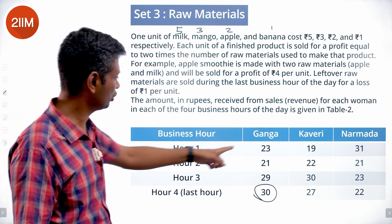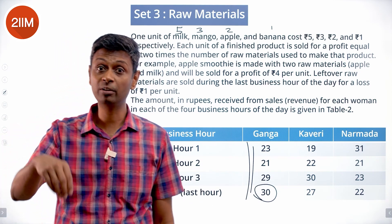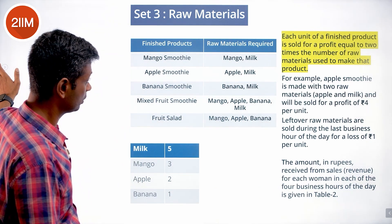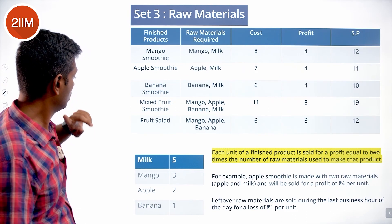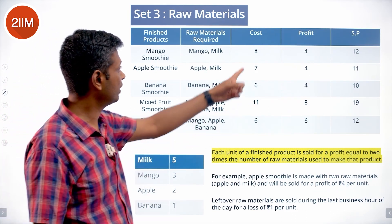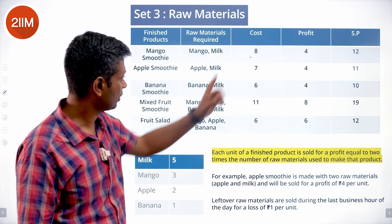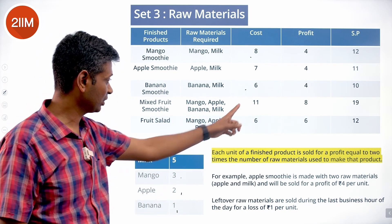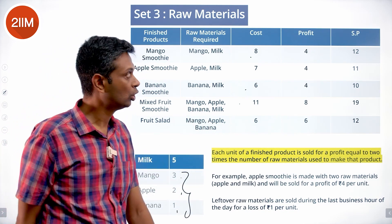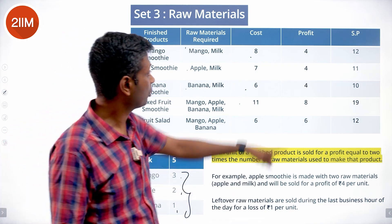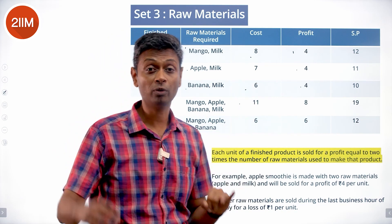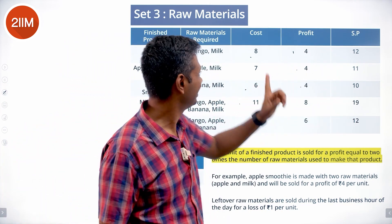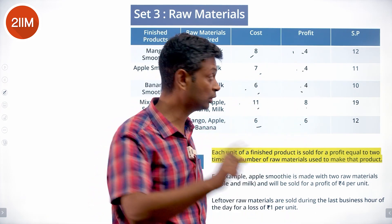We need to figure out the selling price since we know the cost and the profit. Milk and mango cost 5+3=8, profit is 4, selling price 12. Milk and apple cost 5+2=7, selling price 11. Milk and banana cost 5+1=6, selling price 10. All four together cost 11, profit 8, selling price 19. Mango, apple and banana cost 6, profit 6, selling price 12. These selling prices — 12, 11, 10, 19, 12 — are super crucial.